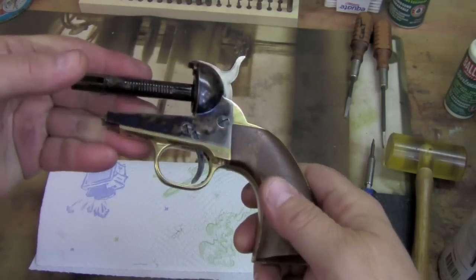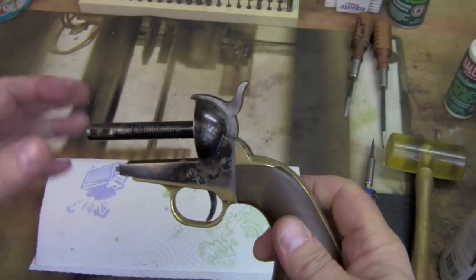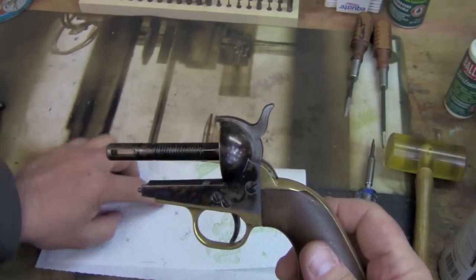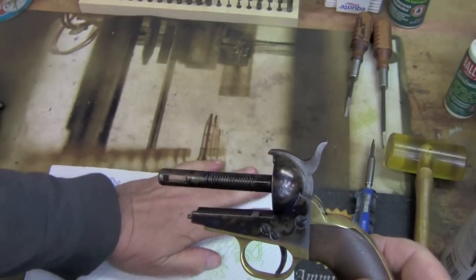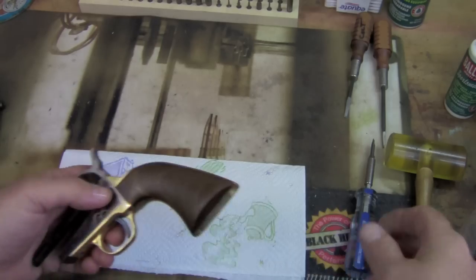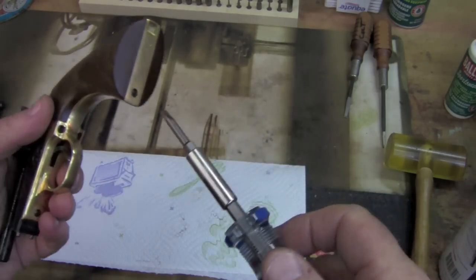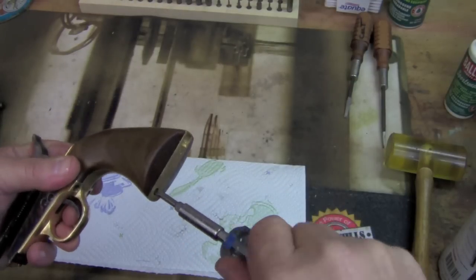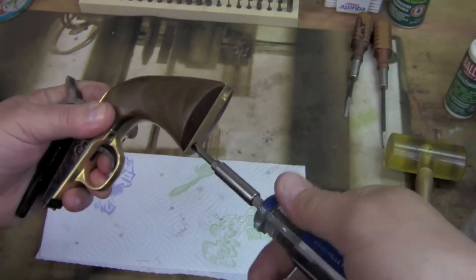Alright, now it's time to disassemble the action. Ordinarily, I would not take this completely apart to clean it. Maybe every three or four times if it's really dirty, but very little fouling gets in the action on these guns. You'd be surprised, but it's good to take them apart periodically because sometimes caps can get in there.